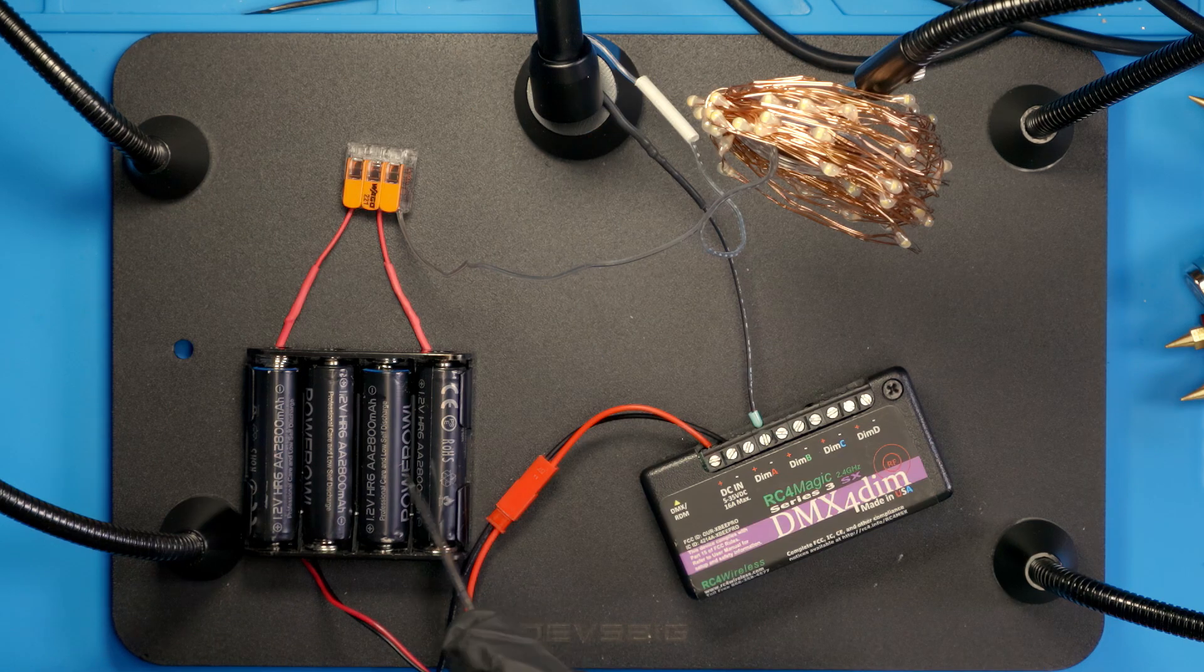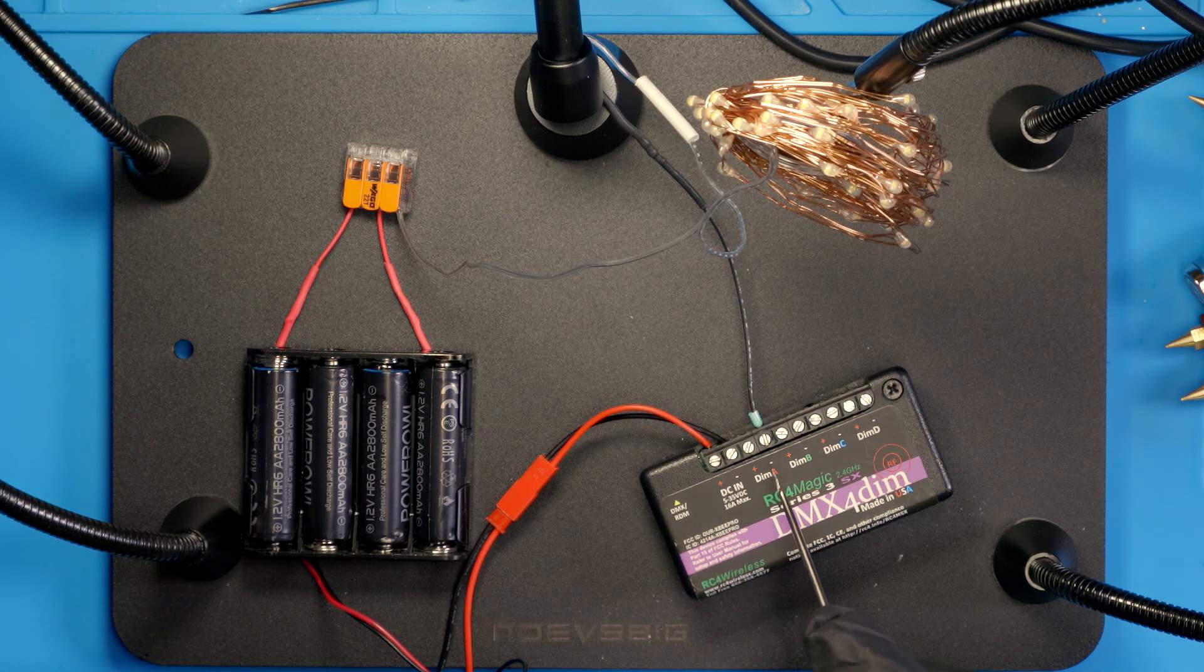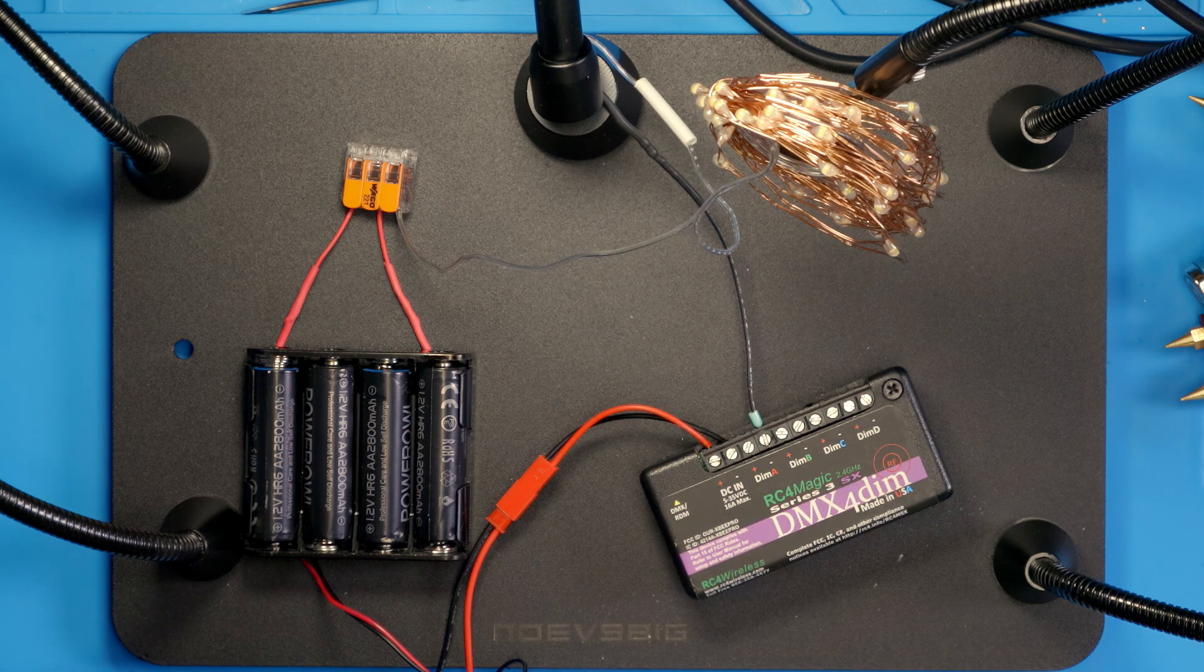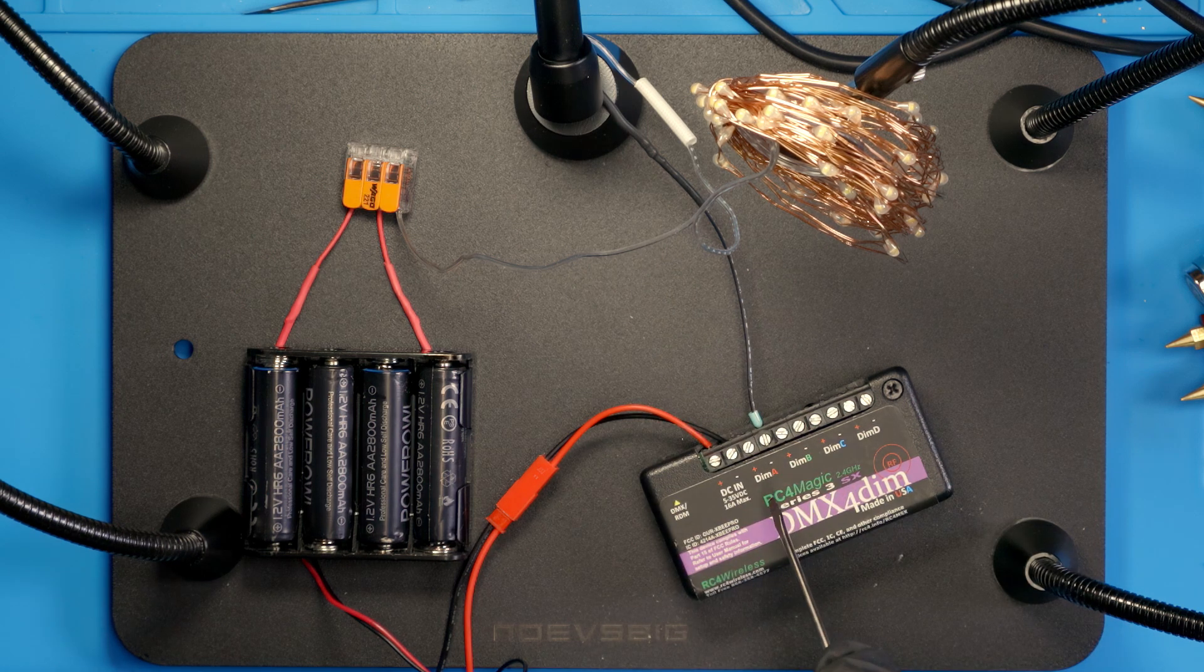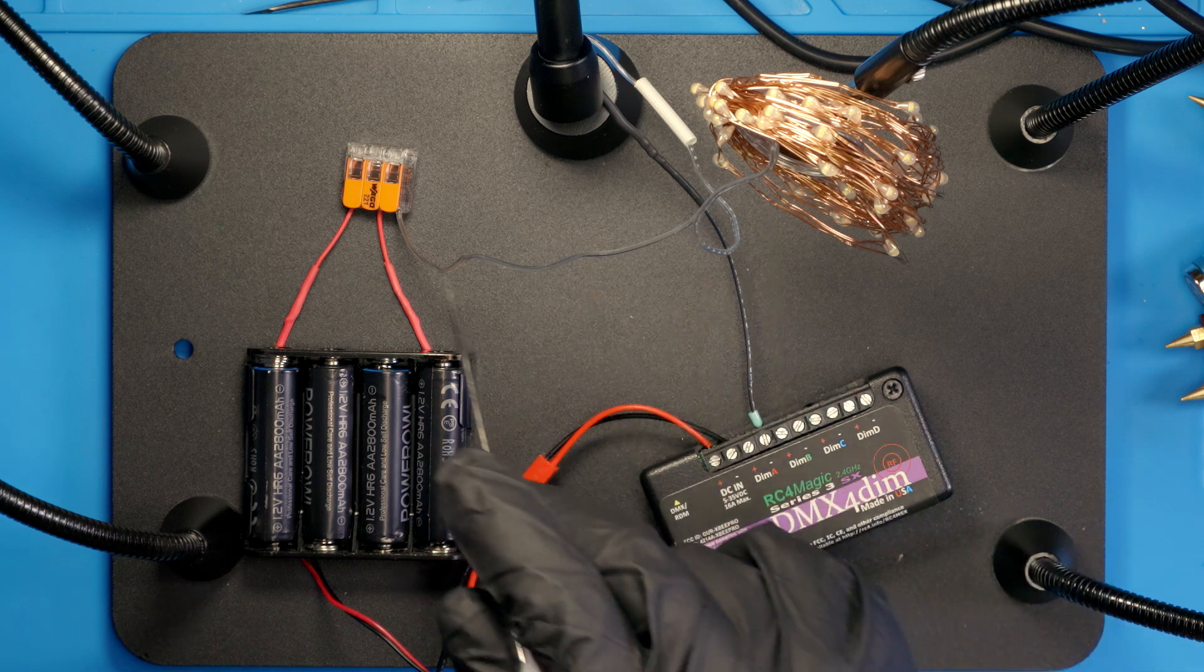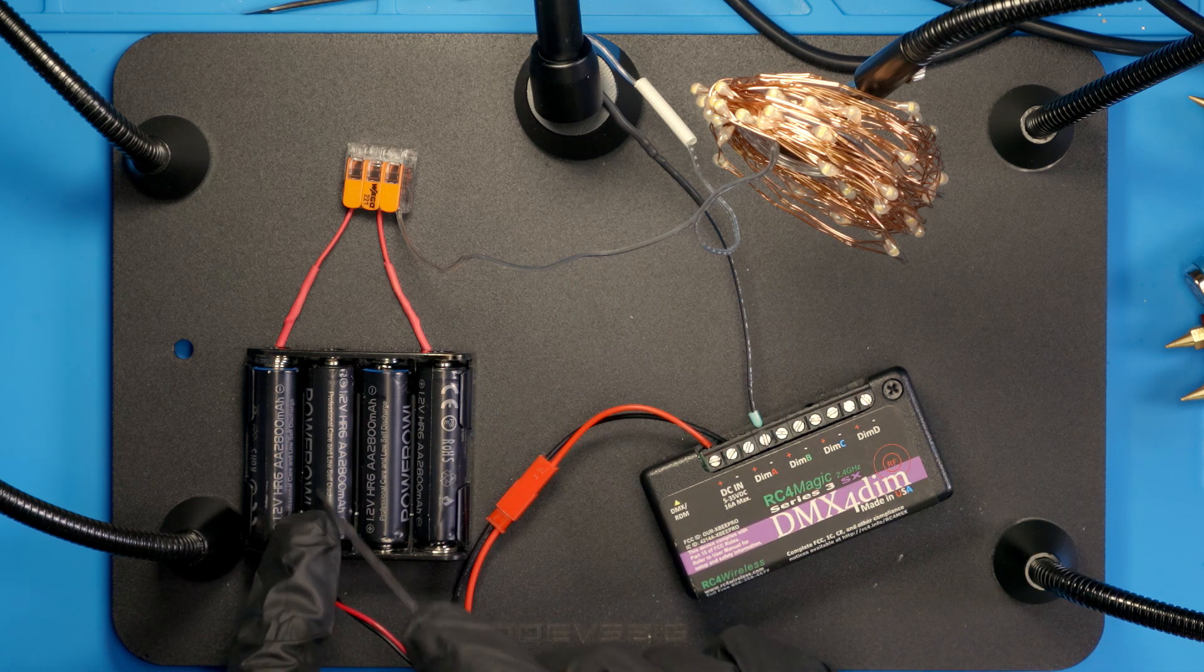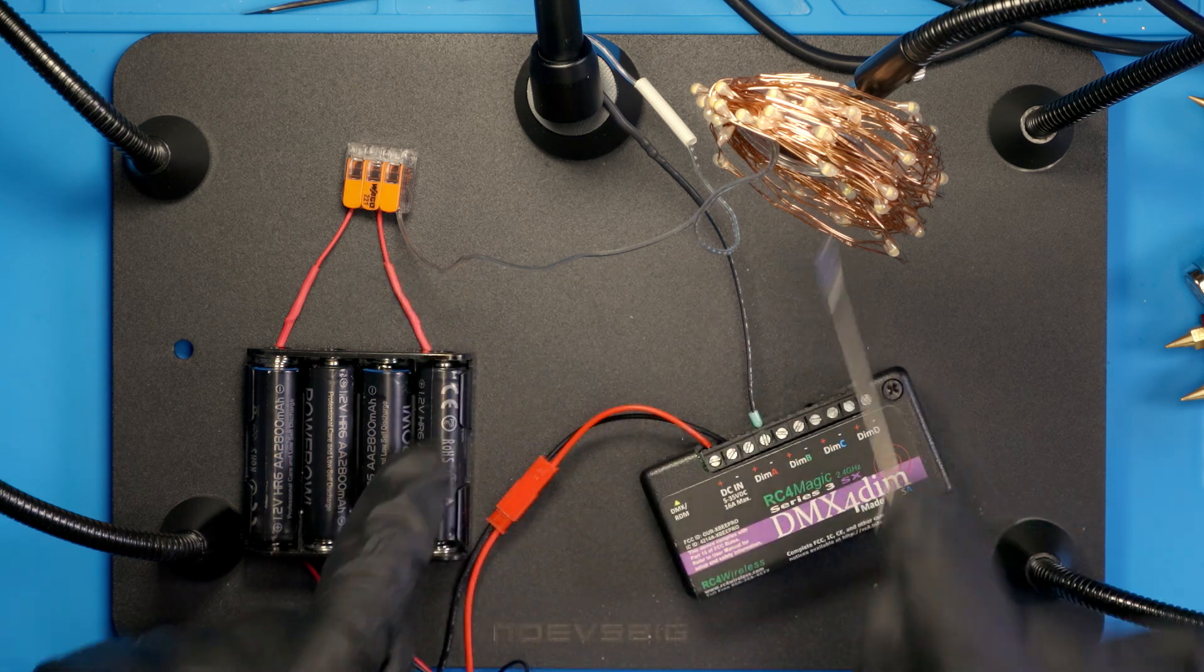We have these four battery cells feeding the DMX 4-dim, and the negative is continuing through dimmer A all the way to our fairy lights. For the positive, a reminder that we are not coming from the fairy lights to the DMX 4-dim. If you do that, you will blow up your fairy lights. We are splitting our voltage off after these three cells. Where the negative is coming out, we follow our three cells, but right here we're splitting that voltage off to the fairy lights.